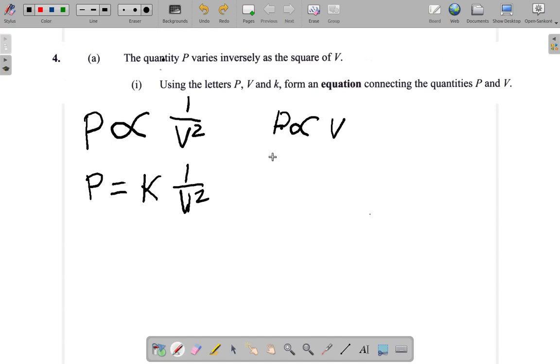Suppose when P is 5 and V is 2. When P becomes 10, V becomes 4. So they double.